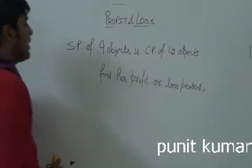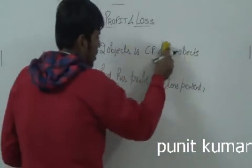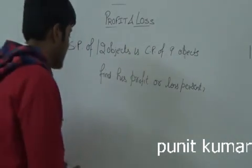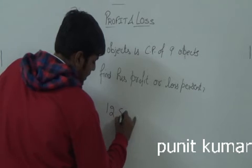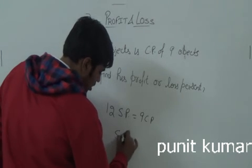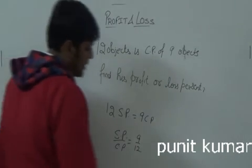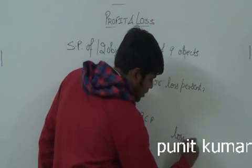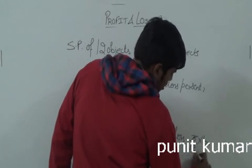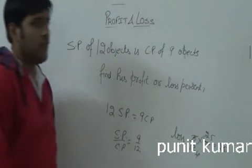Now the same question with a change: SP of 12 objects is equal to CP of 9 objects. Find profit or loss. SP by CP equals 9 by 12. This means SP is less than CP, so he is getting a loss. The loss works out to be 25%.